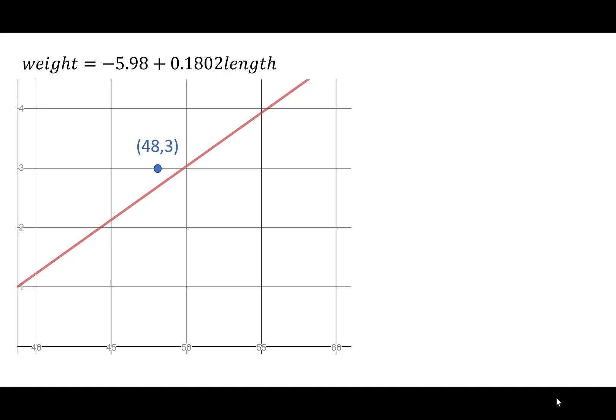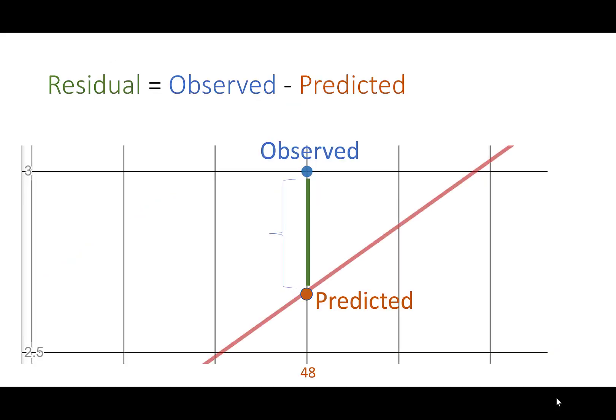There is our observed value: an infant 48 centimeters long and three kilograms. Our predicted value is whatever value corresponds to 48 on our line. If we didn't have that observation, what would we predict this newborn would weigh? Let's blow this up a little bit. That difference is called the residual. The residual is the observed value minus the predicted value, so we need to find what that predicted value is. It looks like it's somewhere between 2.5 and 3.